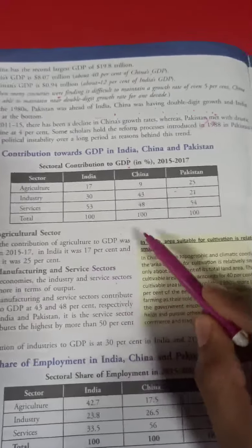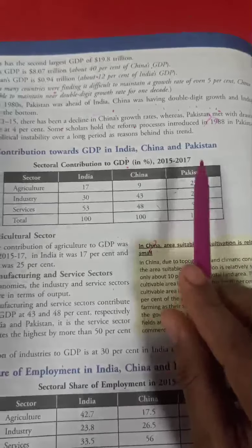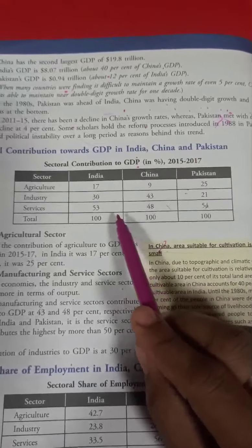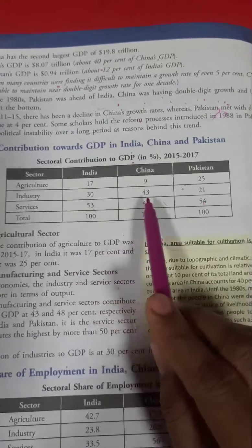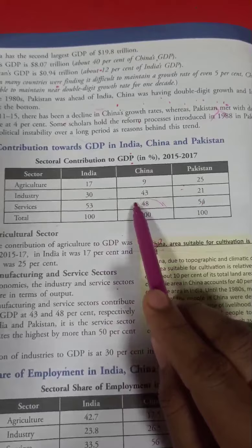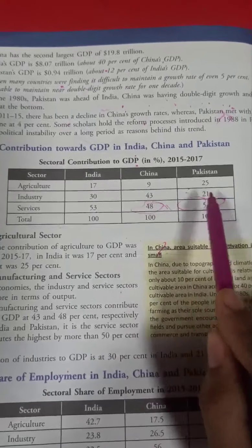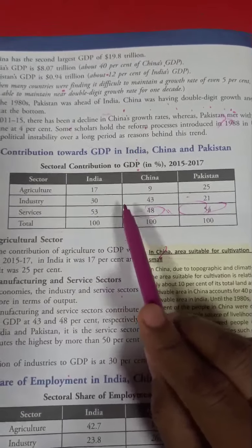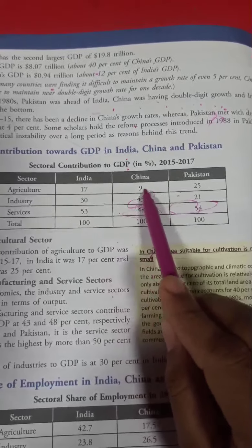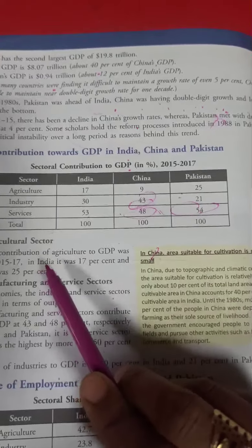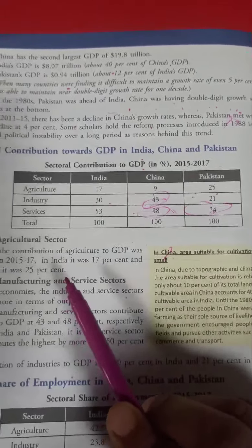In terms of sectoral comparison among India, China, and Pakistan, the service sector is more developed in India and China. As compared to the industrial sector, China's industry and manufacturing sector is more developed, while India and Pakistan are comparatively less developed in this area.